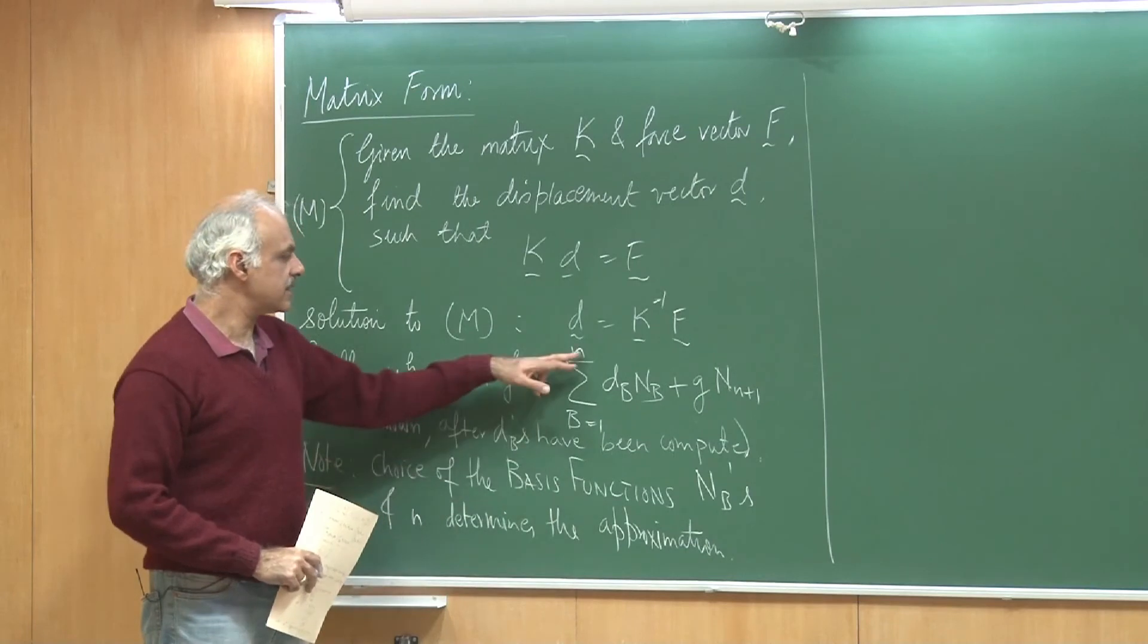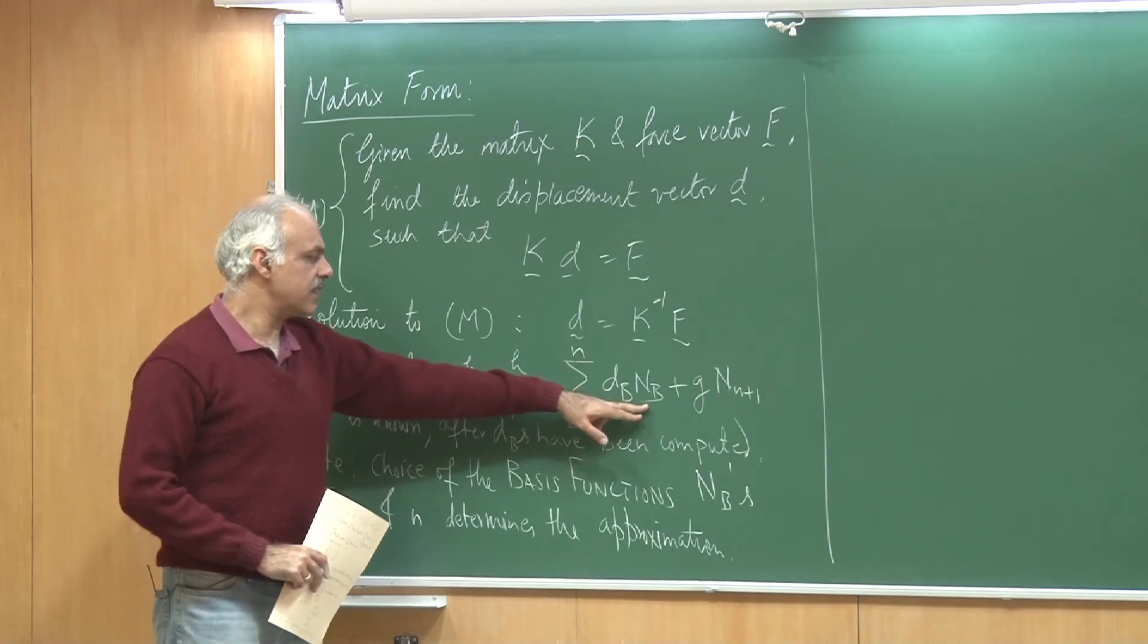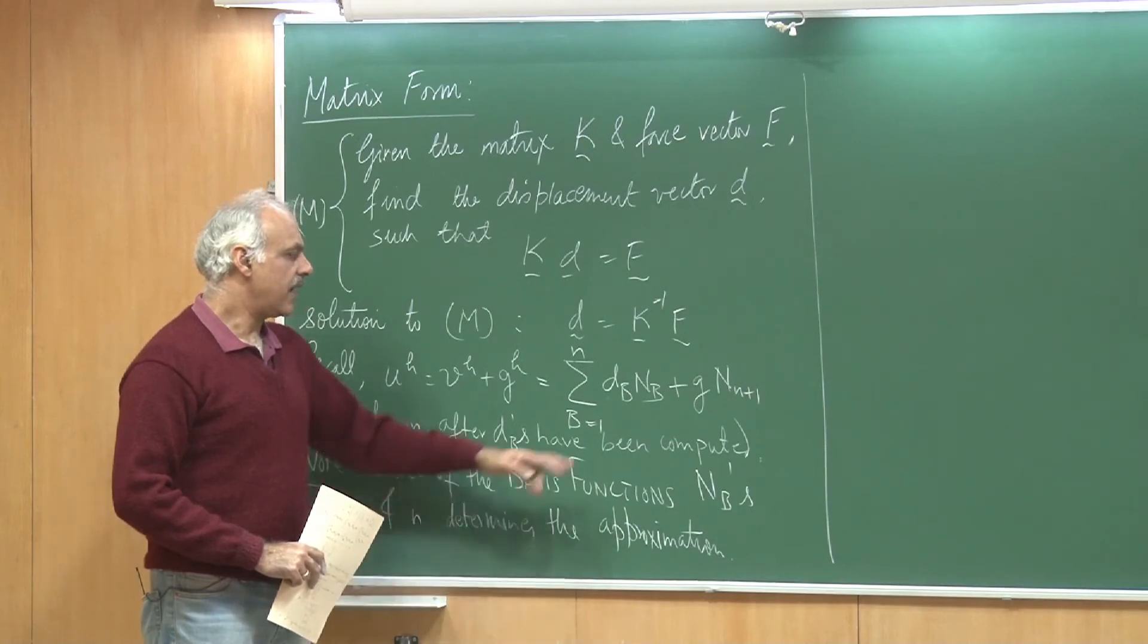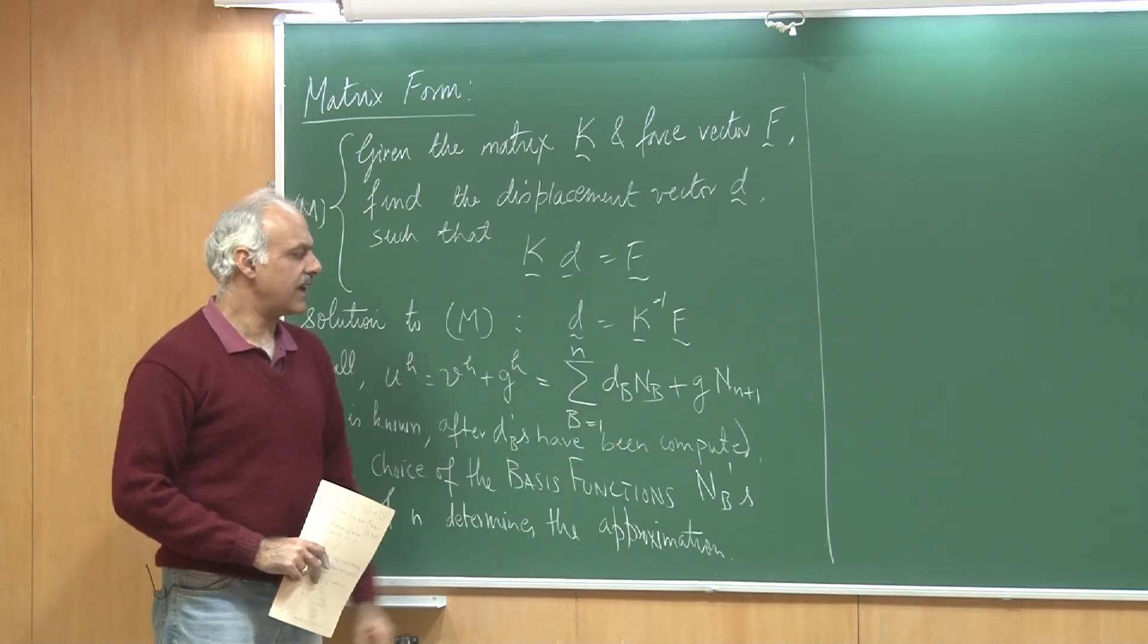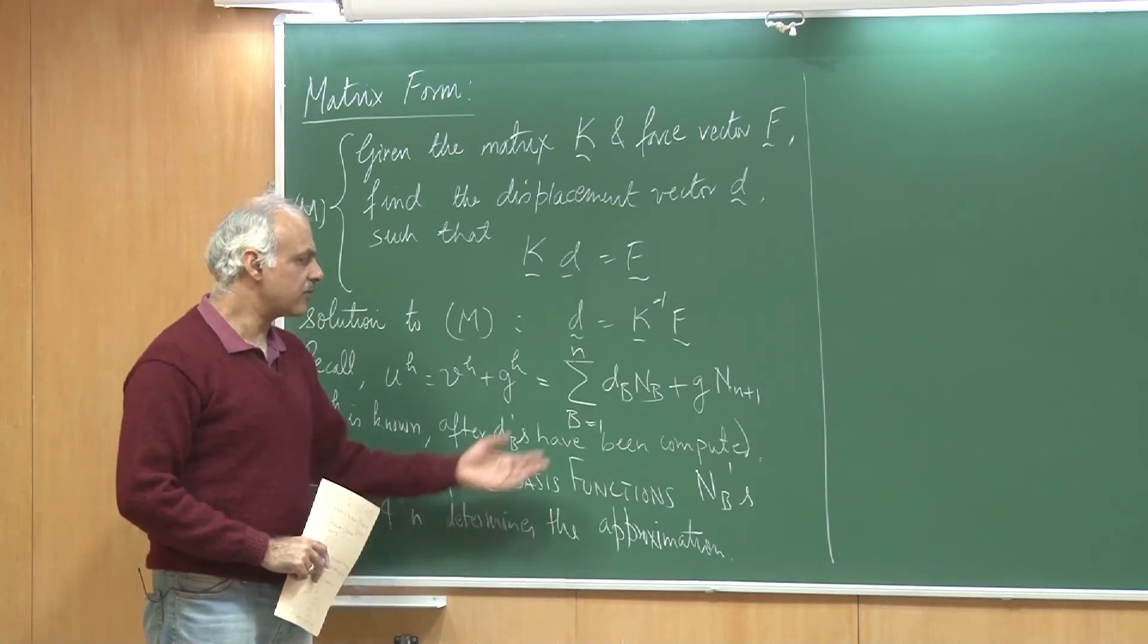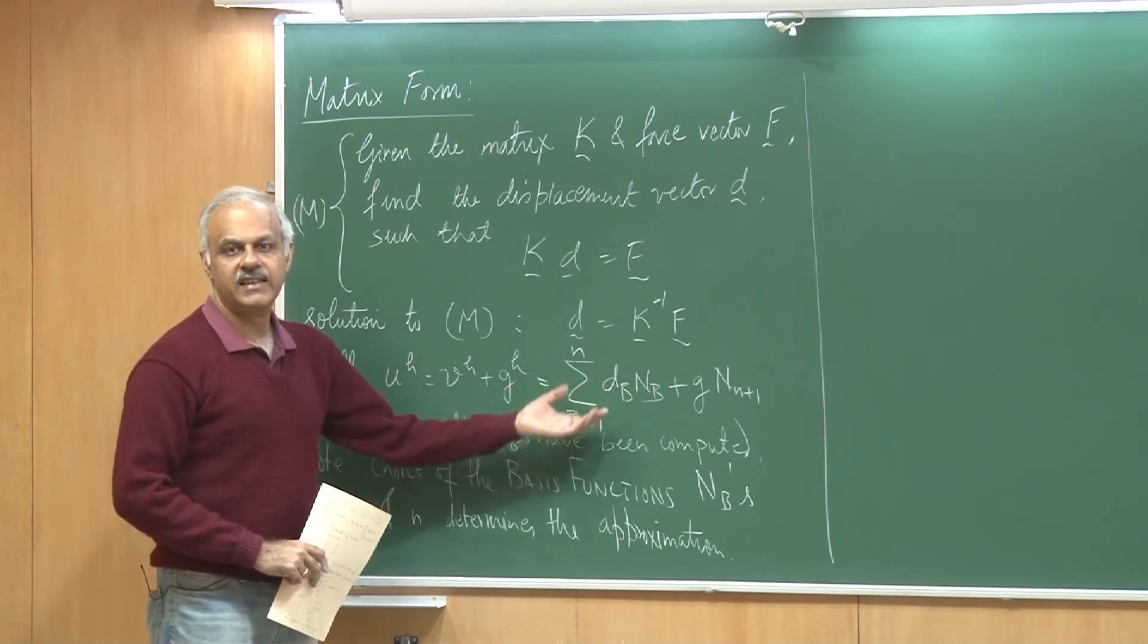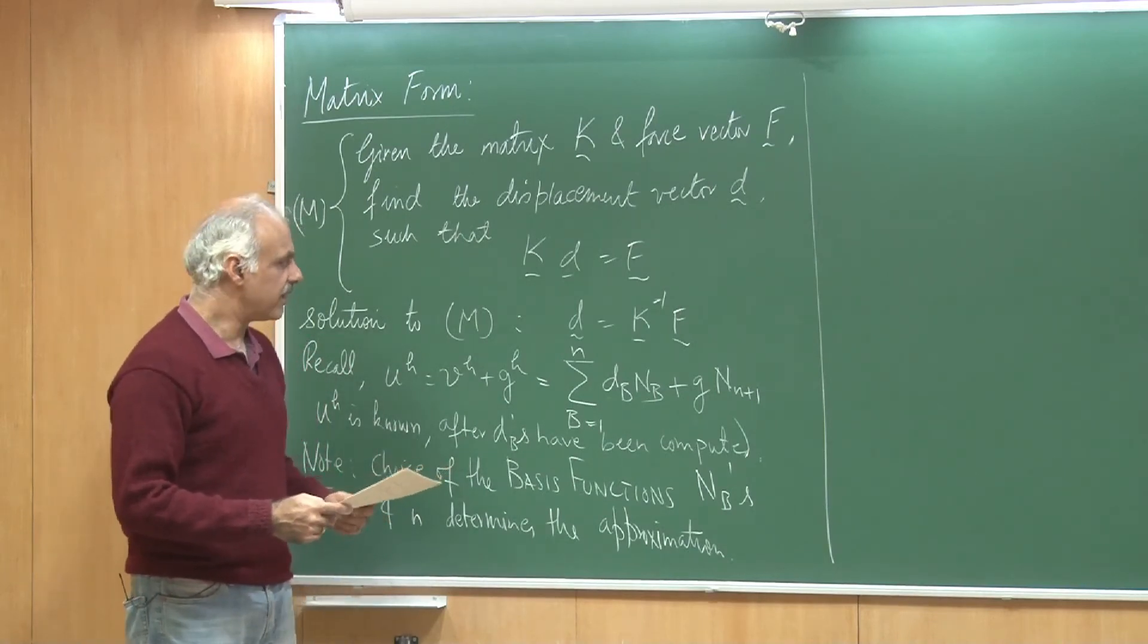If you want a better approximation, you have two options. One is you can increase the number of functions, that is one way. The other is you can say no, I will keep the number of functions same, but I will choose better functions. One example of that would be, I could start by choosing n_b's to be piecewise linear functions and in the next stage, I could say I want to use piecewise quadratic approximation or piecewise cubic approximations. That would be one way of increasing the accuracy. The other could be, I stay with piecewise linear functions, maybe initially I was choosing 20 of them and in the next stage, I can choose 100 of them. That is how these methods work and we are going to look at them.